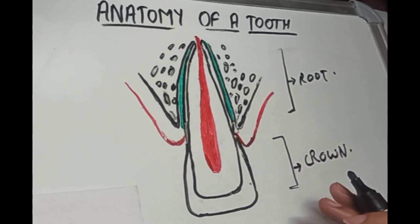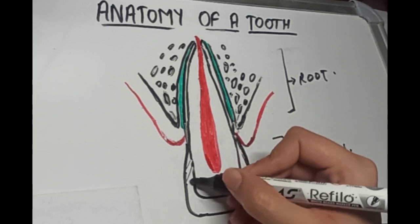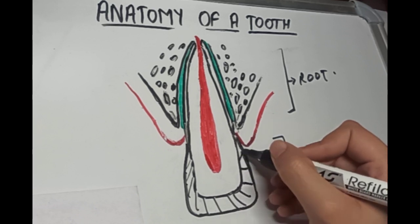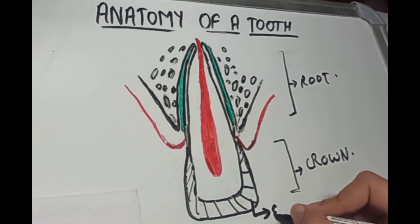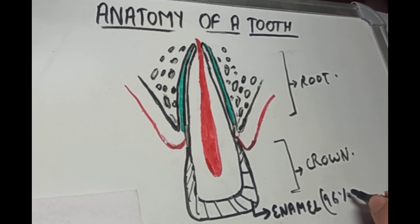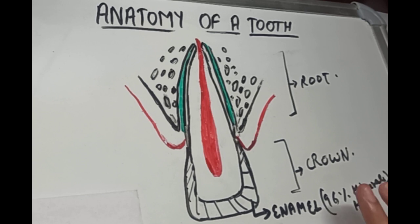Now the crown portion of the tooth is covered with a substance called enamel. This is the enamel that covers the crown portion. It is made up of 96% minerals — that is, it contains hydroxyapatite crystals that form 96% of the enamel. So it is the hardest structure of our body.